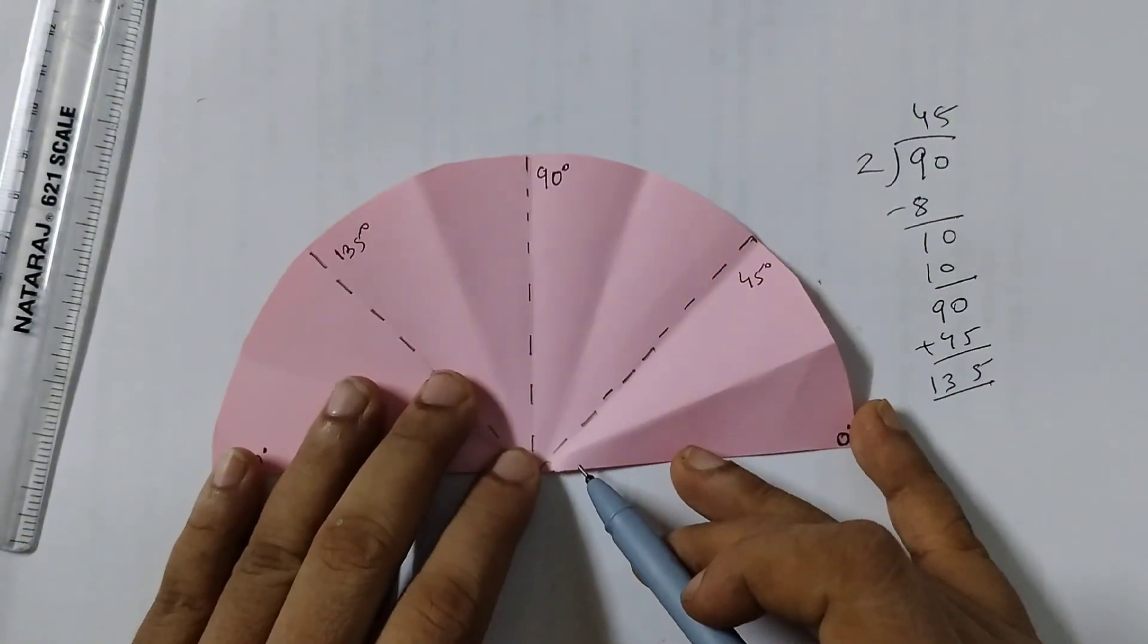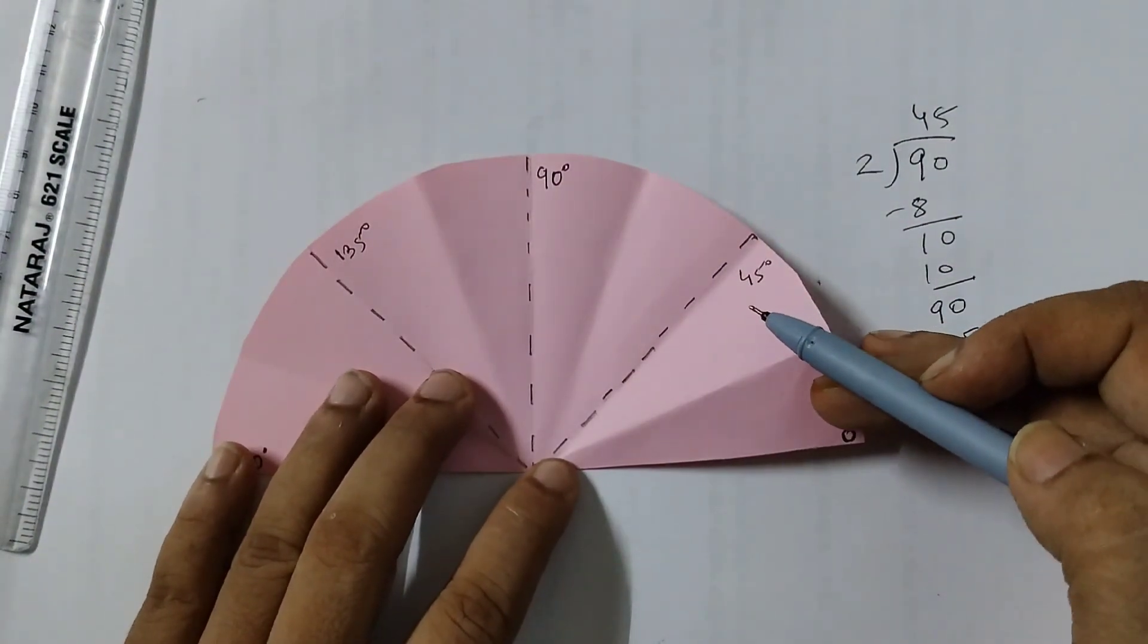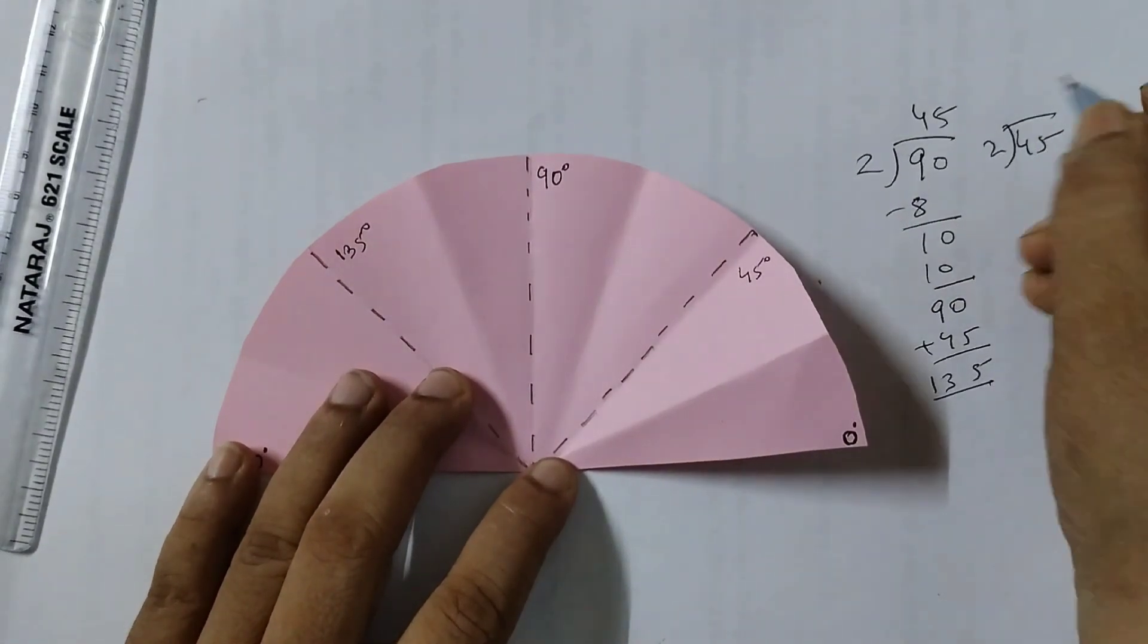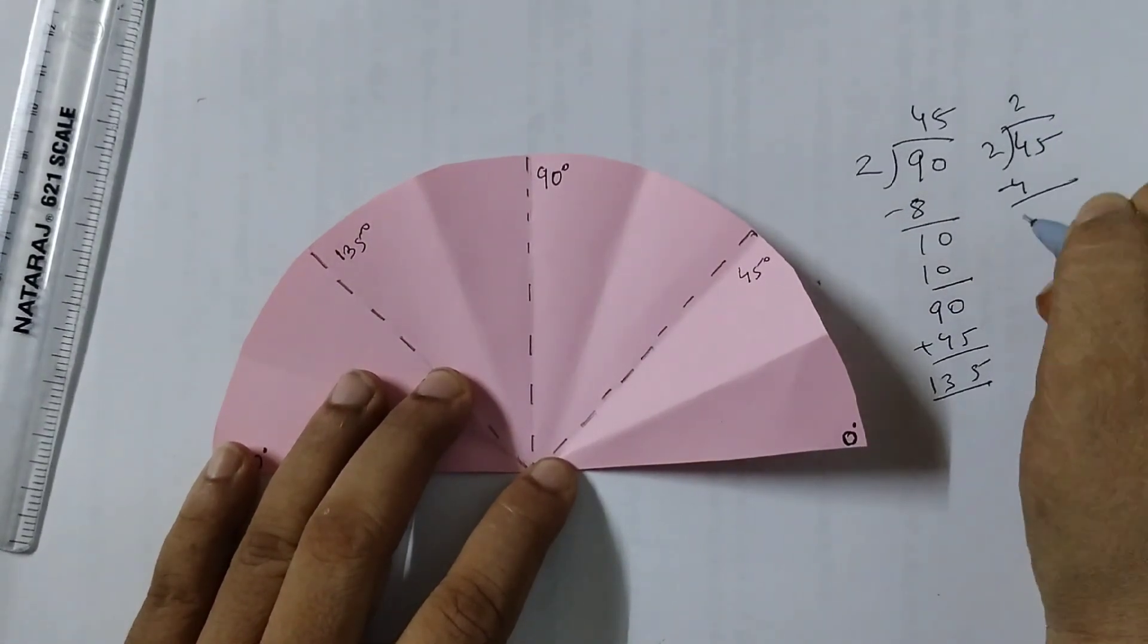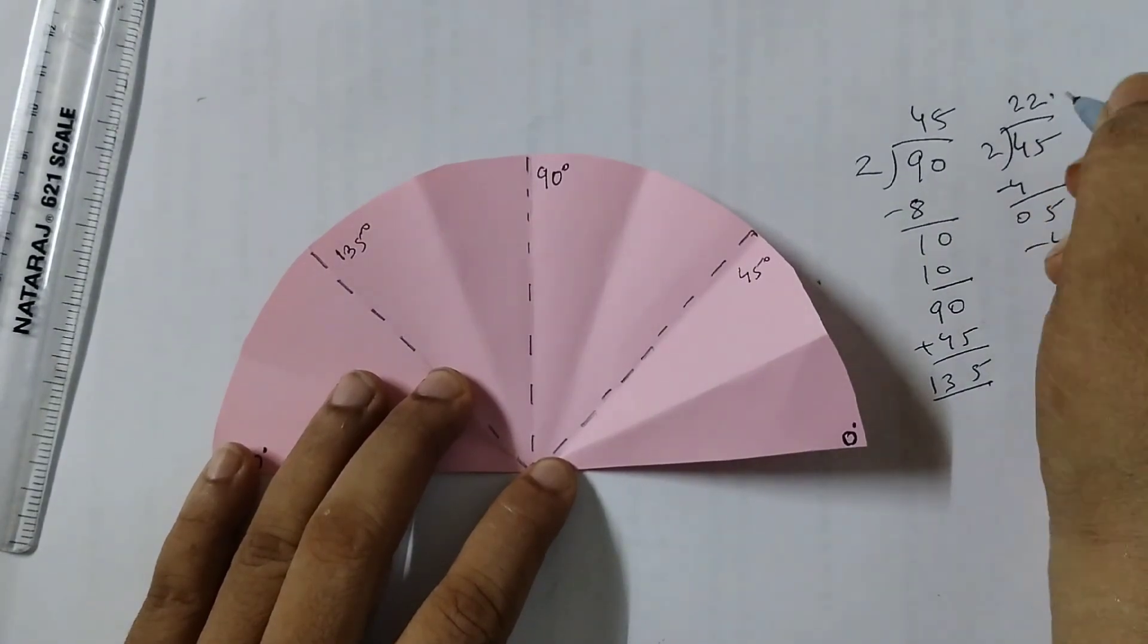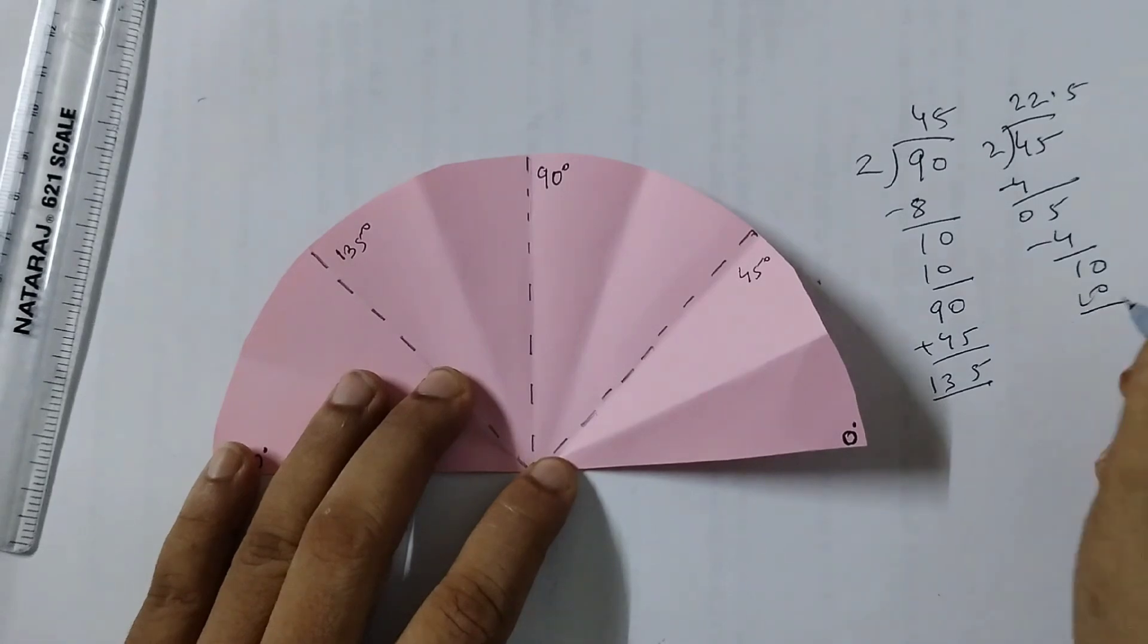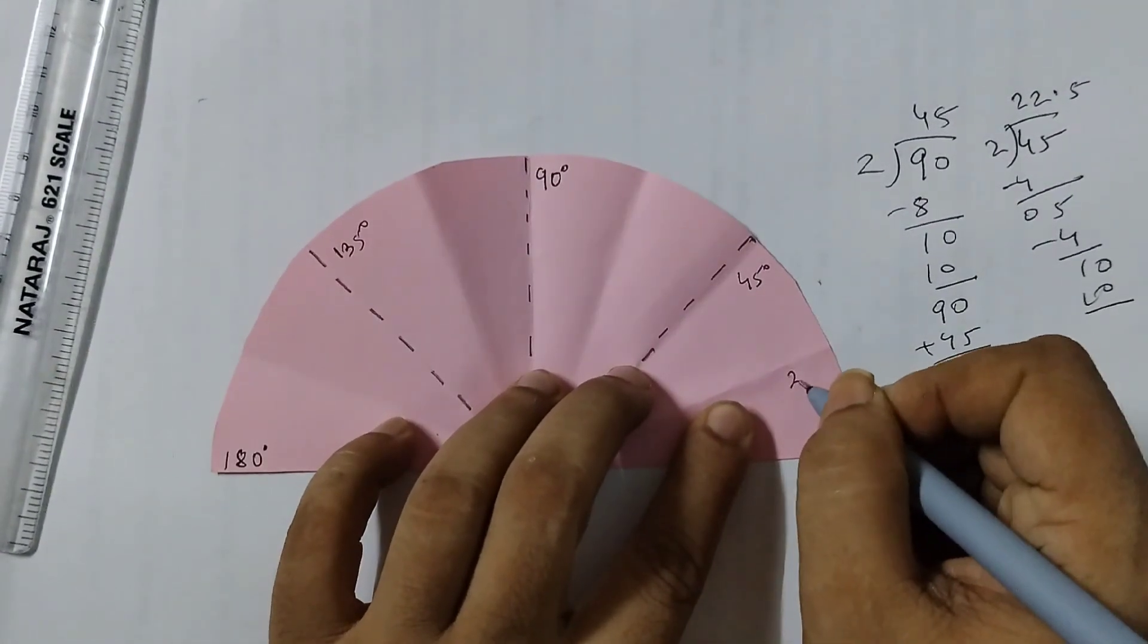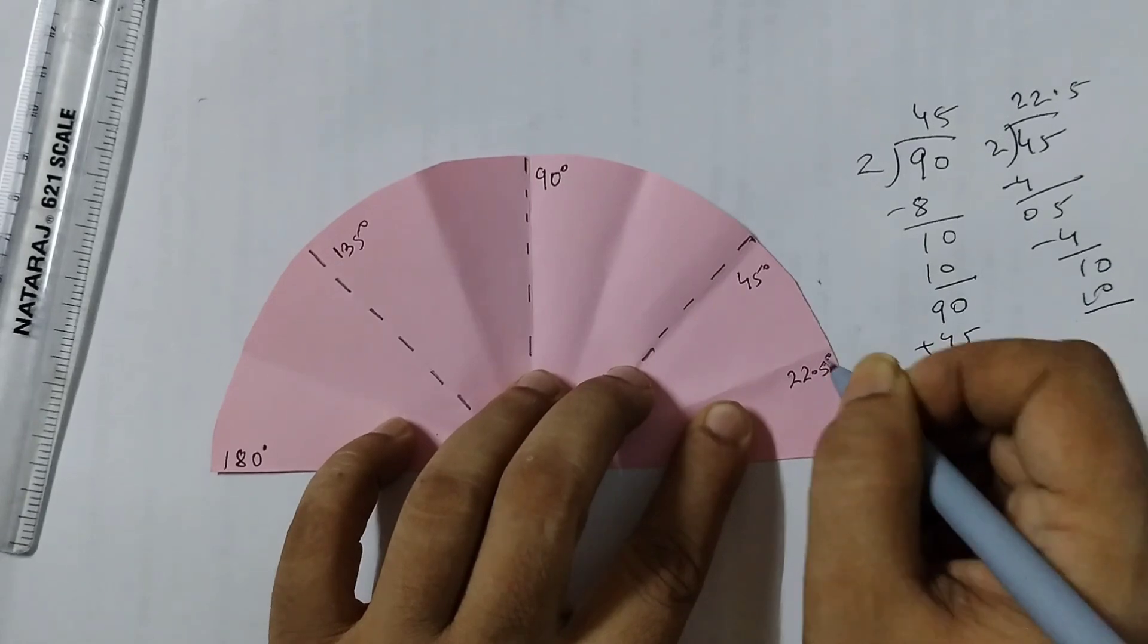Now this angle here would be half of 45 degrees. What is half of 45 degrees? 45 divided by 2 equals 22.5. So this angle here is 22.5 degrees.